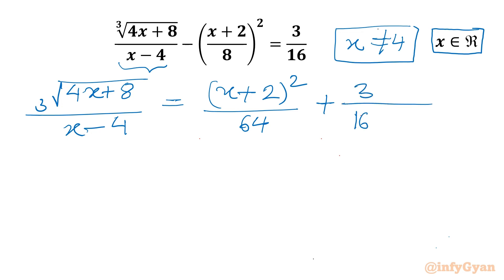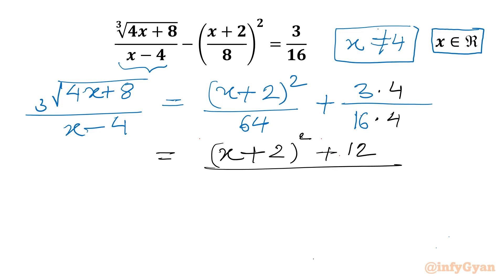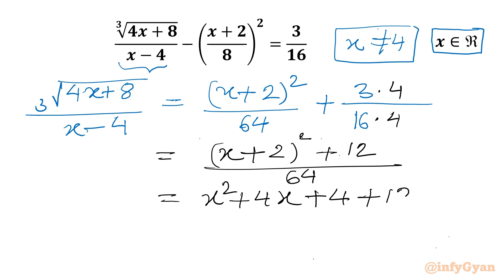To make our denominator the same, I can multiply here with 4, and here also with 4. This will give us (x + 2) whole squared plus 12, divided by common denominator 64. Now using the formula (a + b)² = a² + 2ab + b², I will expand to get x² + 4x + 4 + 12, divided by 64, which simplifies to x² + 4x + 16 over 64.